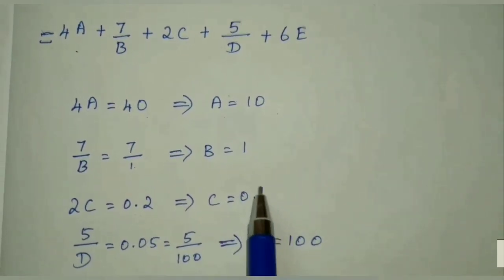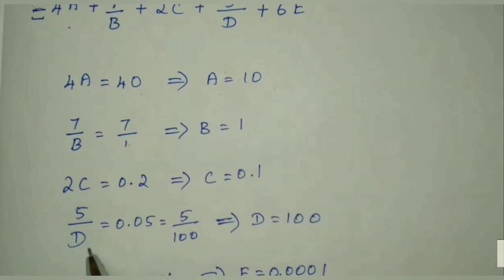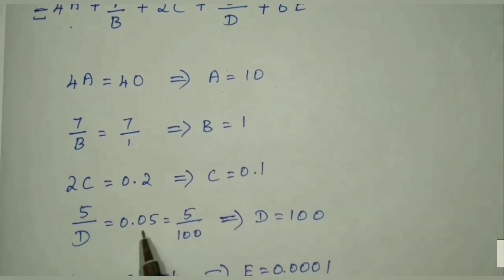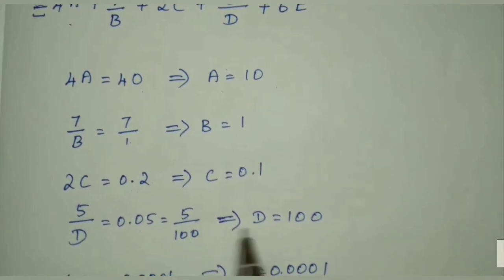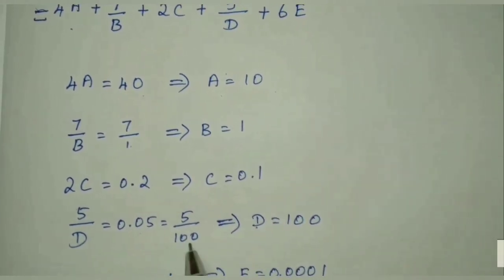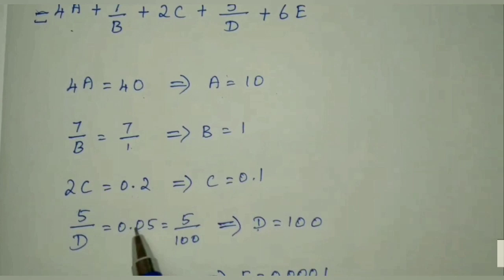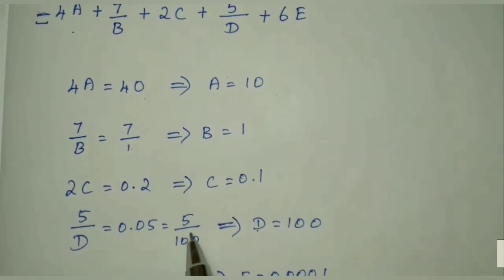C value is 0.1. Then 5 by D equals 0.05. So I will write as a fraction, 5 by 100. So numerator 5, 5, denominator also equal. So D value is equal to 100.